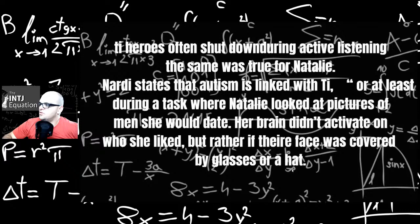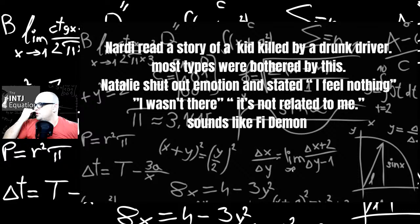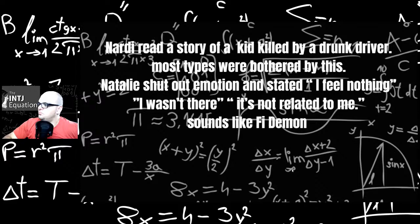Nardi states that autism is linked with Ti, or at least during a task where Natalie looked at pictures of men she would date. Her brain didn't activate on who she liked, but rather if their face was covered by glasses or hats. So that's something that was different between men and women. When men were hiding features with glasses or hats, that's when their activity kind of activated more. Men were attracted more to physical attraction. Nardi read a story about a kid killed by a drunk driver. Most types were bothered by this. Natalie shut up the emotional state that I feel nothing. I wasn't there. It's not related to me. Sounds kind of like Fi demon. They're just able to detach and move on.